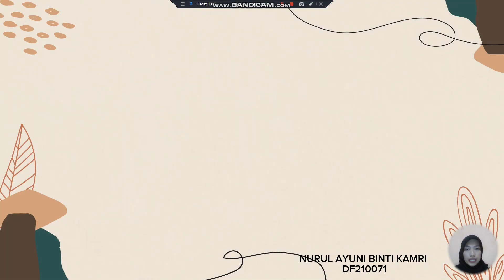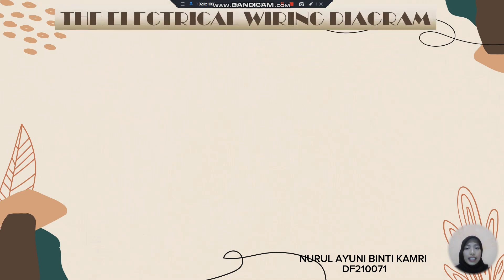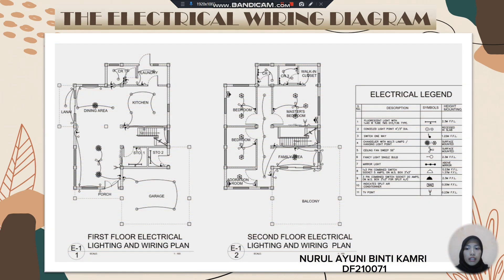Thank you to the previous presenter. I am the next presenter. My name is Nora Ayuni Binti Kambri, metric number DF210071. I want to present about part 3 of this project: the distribution electrical system. For the electrical wiring diagram, I have two plans — for the first floor and second floor. This shows the detailing of the electrical elements in this project.